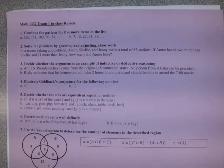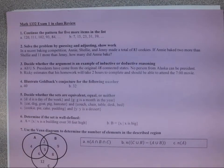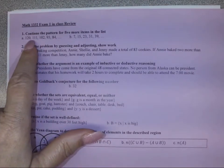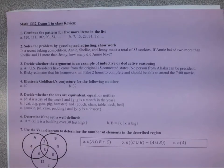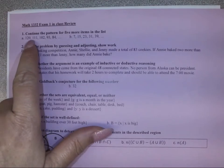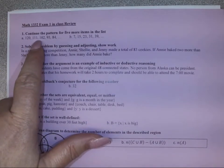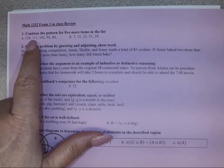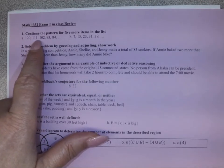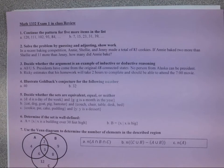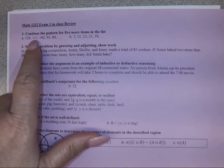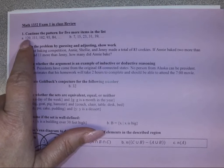We are looking at Exam 1 in-class review, and we are going to look at several different types of problems. We're going to begin with continuing the pattern for five more items in the list. When looking at this, we consider whether it's addition, subtraction, multiplication, or division. We look at the comparison of two numbers and do a subtraction to see whether the difference is positive or negative, taking the second term and subtracting the first.